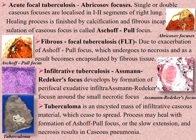Fibrous focal tuberculosis: due to exacerbation of the Ashoff–Puhl focus, which undergoes necrosis and becomes encapsulated by fibrous tissue. Fibrous focal tuberculosis may also originate from Simon foci remaining in the lung apex. Infiltrative tuberculosis is characterized by formation of perifocal exudative inflammation around a small necrotic focus, referred to as the Assmann-Redeker focus. Formed caseous masses are aspirated into neighboring bronchi and become the basis for new focus formation. During progression, there is possible increase of infiltration zone and formation of small destructive cavities.